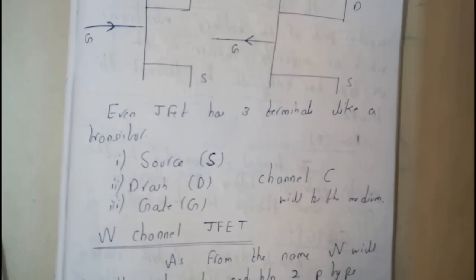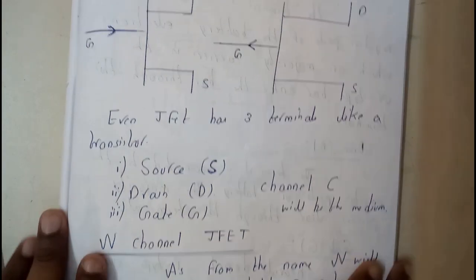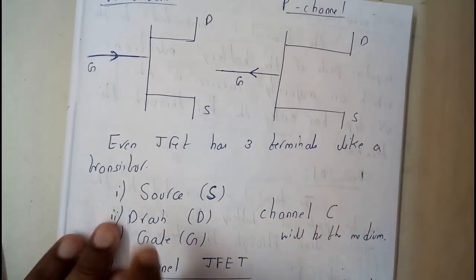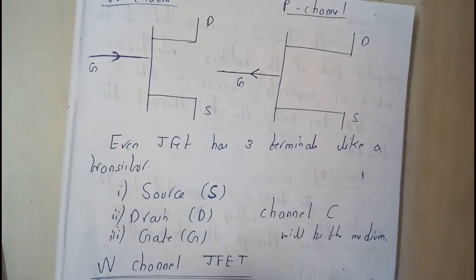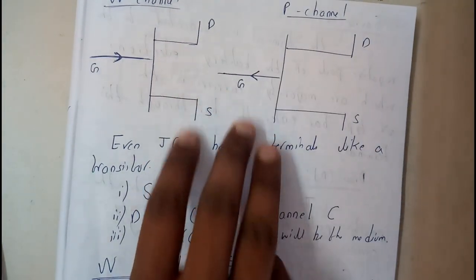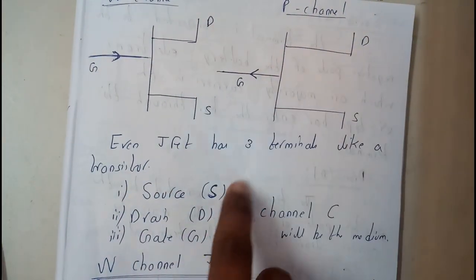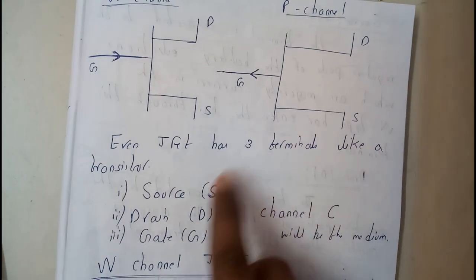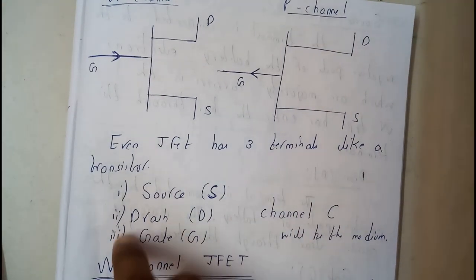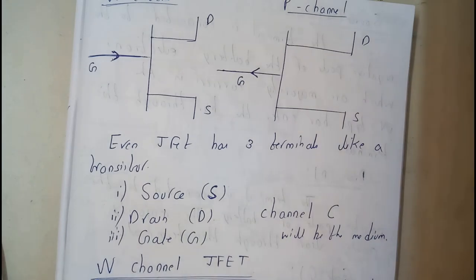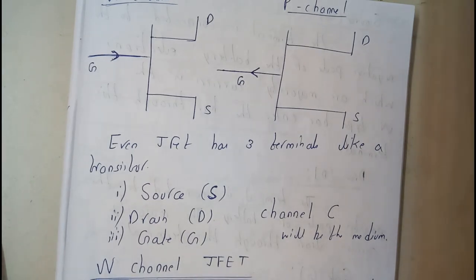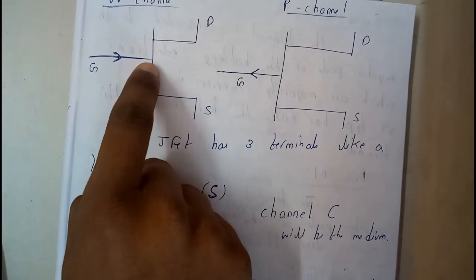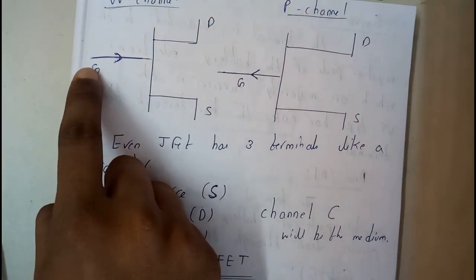The basic block diagram of n-channel and p-channel will be like this. This is also a three terminal device. The three terminal names are source, drain, and gate. In PNP and NPN, the arrow direction means we used to get it outside, but here it's opposite - we get the direction inside.